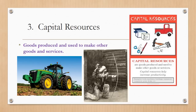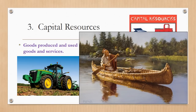Number three is a capital resource — a good produced and used to make other goods and services. Think of a tractor or tools. In the picture of the Native American, his bow and arrow is a capital resource. The canoe is also a capital resource.